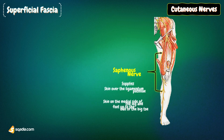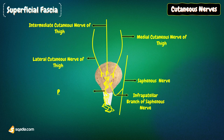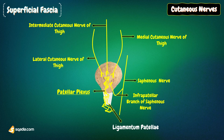These are all the cutaneous nerves that supply the region of the thigh. They come together to form a bundle called the patellar plexus, a plexus of fine nerves situated in front of the patella, the ligamentum patellae, and the upper end of the tibia. It is formed by contributions from the anterior division of the lateral cutaneous nerve, the intermediate cutaneous nerve, the anterior division of the medial cutaneous nerve, and the infrapatellar branch of the saphenous nerve.